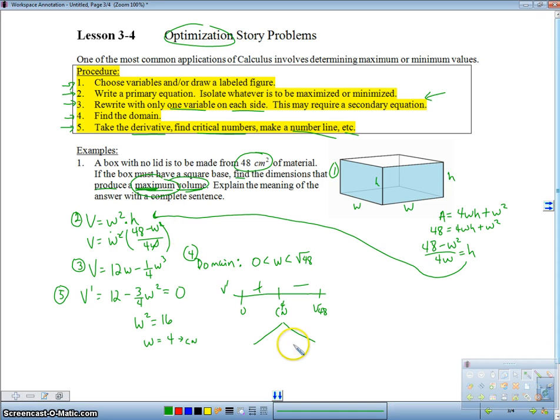usually it turns out that this critical number is going to be either relative min or relative max, based on what it's asking you for in your optimization. So, that's great. So what is the maximum value? Well, we know that if we plug in 0, it's going to be down here. If we plug in square root of 48, it's going to be down here because we're not going to have, we won't even have a height over here. So, this has got to be our maximum.